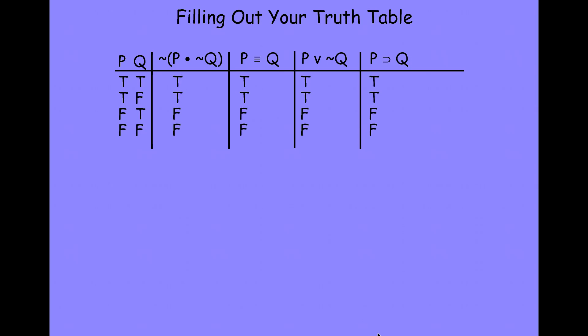Now we're ready to start evaluating the formulas by filling out the body of the truth table. We do this by first determining which connectives to start with, then the next and the next until we get to the very end. We always start with the connectives that are in the greatest number of brackets. We think of ourselves as a little logical insect inside an onion, eating our way out through each of the layers until we get to the outside. The last connective we do will be called the main connective, and it gives us the truth value for the whole formula.